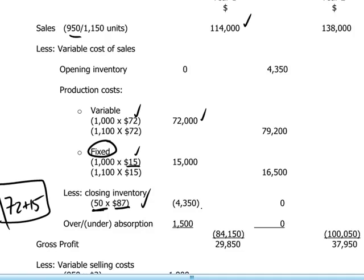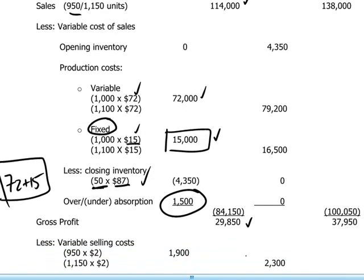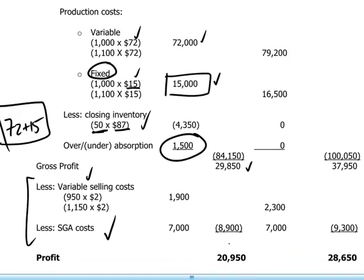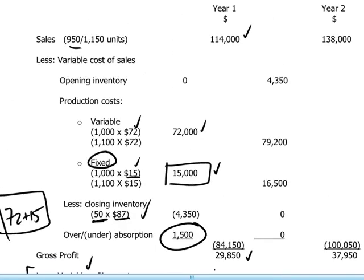We must not forget that in this calculation we have absorbed $15,000 of fixed overheads, but actual fixed overheads were $16,500, so we have not reflected the full amount. We make that adjustment by adding $1,500 to our cost of sales. In this way we arrive at a gross profit of $29,850, after which we deduct selling costs — whether fixed or variable, they come after gross profit in the absorption costing system — to arrive at a final profit of $20,950.